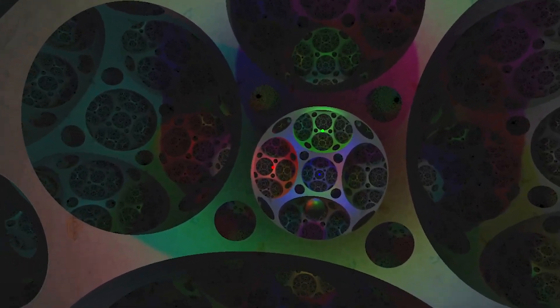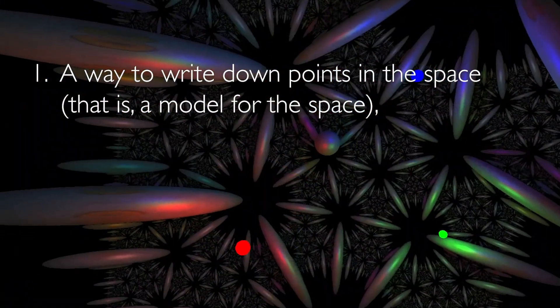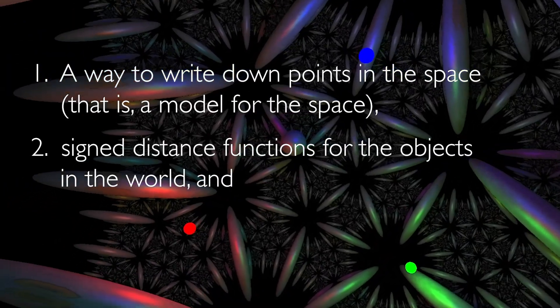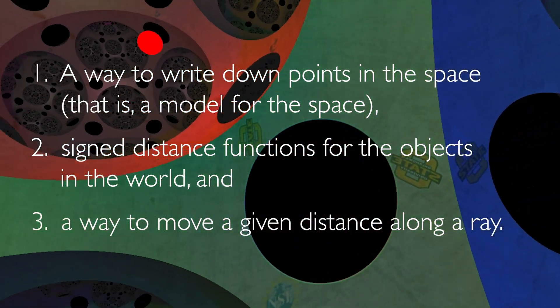Ray marching was developed to draw graphics in Euclidean space. We generalized it to negatively curved space. But all you need for any kind of geometry are: first, a way to write down points in the space, second, signed distance functions for the objects in the world, and third, a way to move a given distance along the ray.